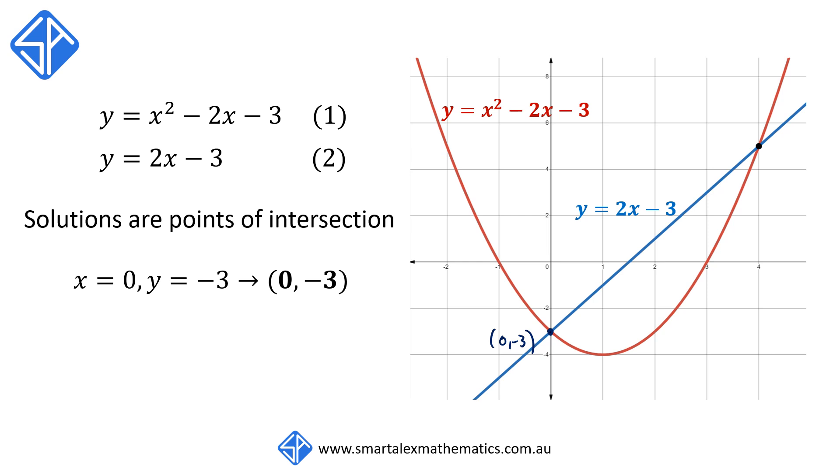And our second solution, x equals 4 and y equals 5, corresponds to the second point of intersection, 4, 5.